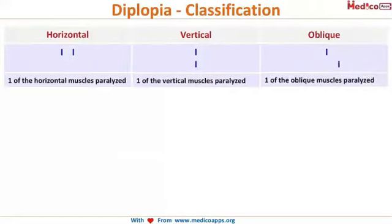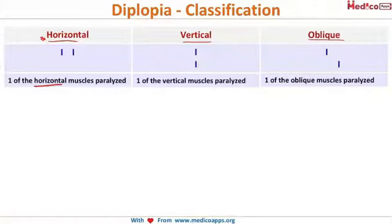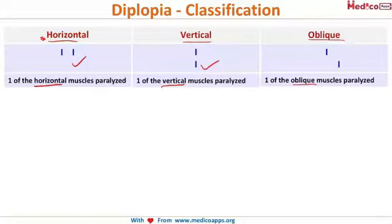Now let's learn about diplopia. It is of three types: horizontal, vertical, and oblique. When we say these words, it refers not to the displacement of the second image but to the muscle that is paralyzed. In horizontal diplopia, the horizontal muscles are paralyzed; in vertical diplopia, the vertical muscles are paralyzed; and in oblique diplopia, the oblique muscles are paralyzed.